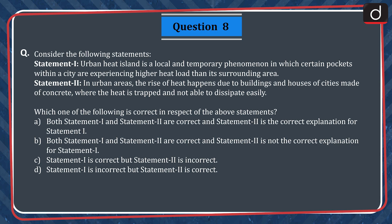Question 8. Consider the following statements. Statement 1: Urban heat island is a local and temporary phenomenon in which certain pockets within a city experience a higher heat load than the surrounding area. Statement 2: In urban areas, the rise of heat happens due to buildings and houses made of concrete where heat is trapped and not able to dissipate easily. Which of the following is correct in respect of the above statements?